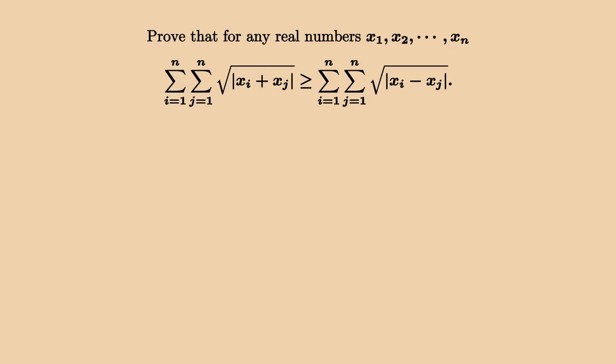To get a better sense of the problem, let's start with some small cases. For n equals 1, it is trivial because the left-hand side is positive and the right-hand side is 0.